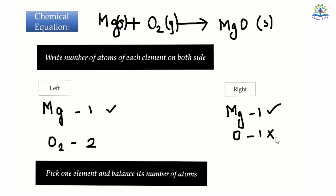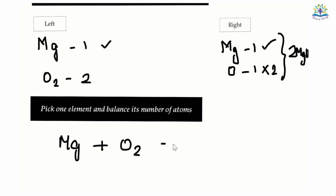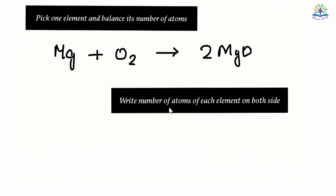In step 2, start balancing one element at a time and repeat step 1 and 2 until all elements are balanced. The magnesium atoms on both sides are equal, but there is a difference in the number of oxygen atoms. So what I will do first is multiply 2 on the right side so that the number of oxygen atoms become equal on both sides. Since I have multiplied 2 to oxygen, the corresponding compound on the right side should also be multiplied by 2. So the right side becomes 2MgO now.